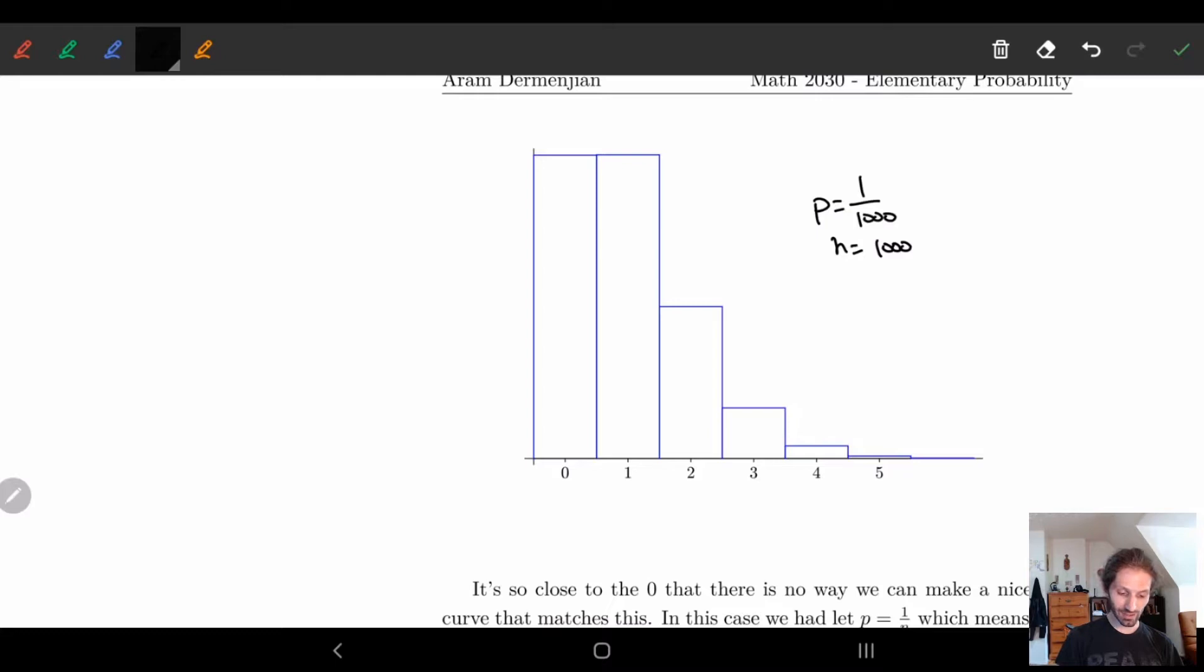So this doesn't look at all like our normal approximation. Here we almost have something that's more like that, which is very different. We're going to use this mentality to look at when n and p are kind of close to each other.